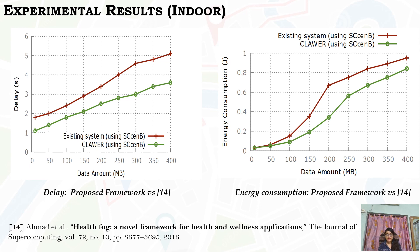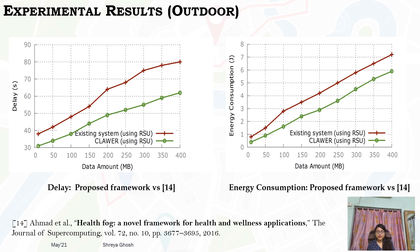The experimental results are illustrated in two broad aspects: the first is power consumption and delay, and the second is the accuracy of path prediction. For measuring delay and power consumption of the framework, we have taken different samples of data from the experiment and achieved better performance as shown in the figures. The figures represent the delay and energy consumption in the outdoor region where roadside units are used as a fog device. CLAWER utilizes a Markov predictor for selecting the best route to reach the destination in minimum delay, showing promising reduction of delay and energy consumption compared to the existing cloud-only solution approach.